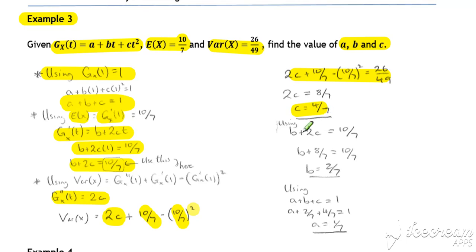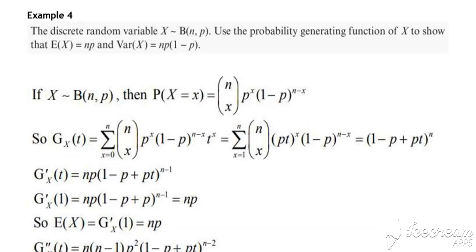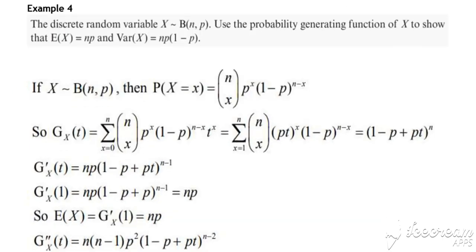Having found c, we can then work out b using our second equation, and then work out a using our first equation — working backwards with the results to find the unknowns. We can use this technique for probability generating functions to derive the standard results for known distributions.